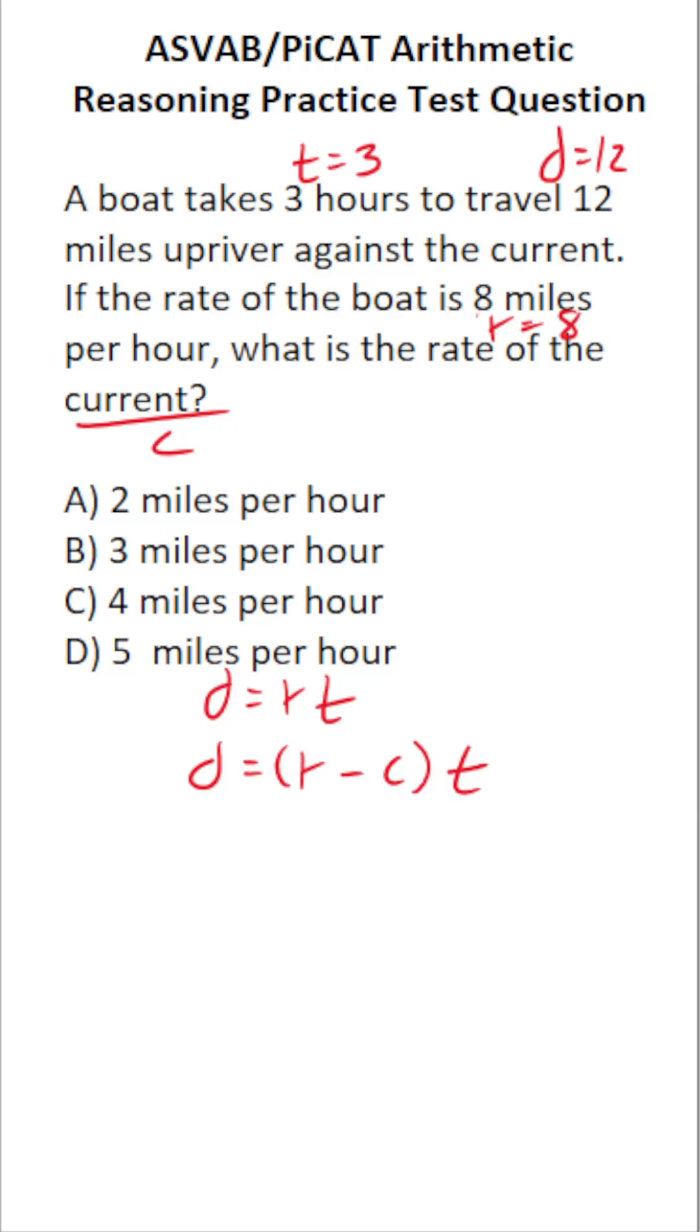Let's plug in the values that we know. We know the boat traveled a distance of 12 miles at a rate of eight miles per hour. We don't know C, and it took three hours. So we're going to be solving this new distance rate and time formula that includes the variable for current for C.